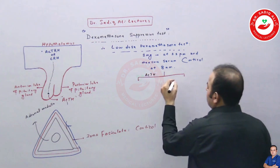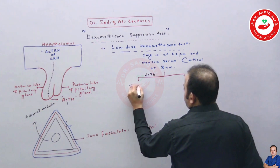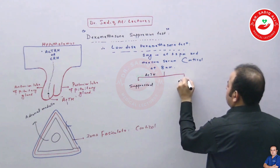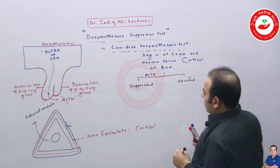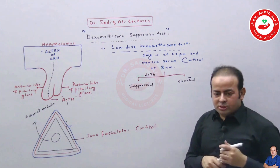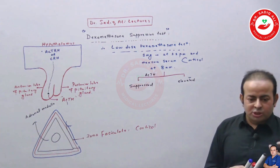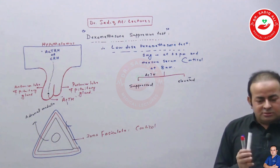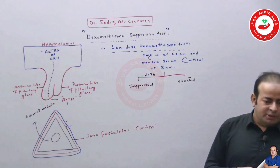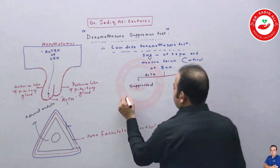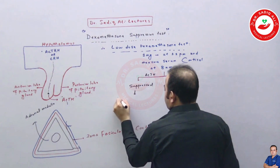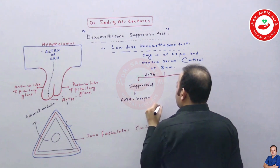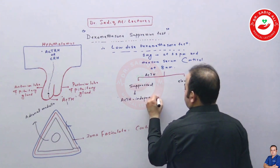There are two possibilities: ACTH is either suppressed or not suppressed. If we give low dose dexamethasone and ACTH is suppressed, it means the Cushing syndrome is ACTH-independent, and the problem lies in the adrenal gland itself — this is called ACTH-independent Cushing syndrome.